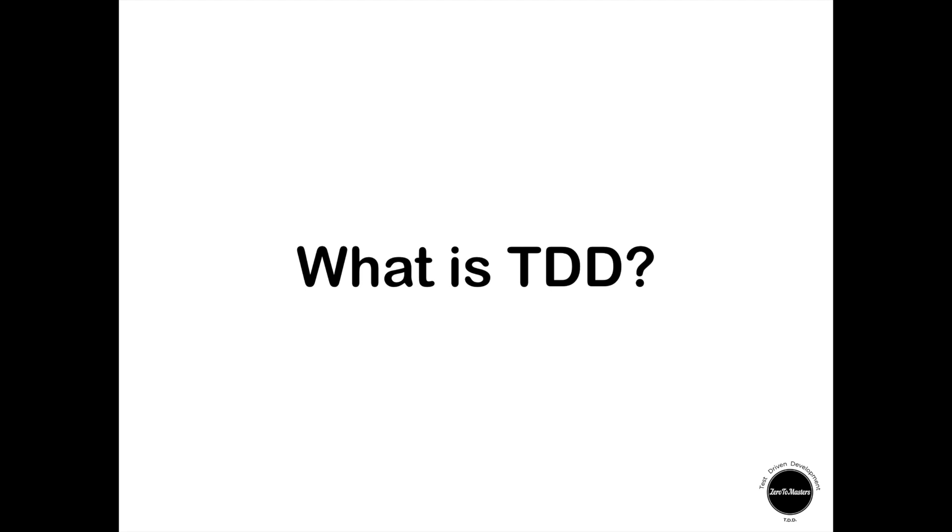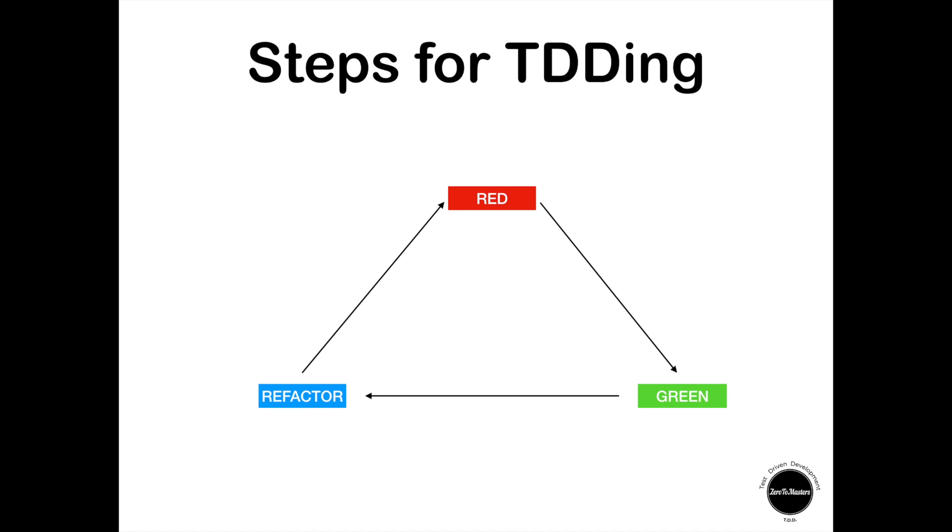If you follow the TDD steps, you will end up with better application code. So how can we do TDD? TDD has three main phases: red, green, and refactor.